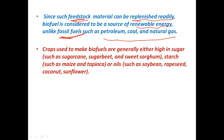The crops used to make biofuels are generally high in sugar — for example sugarcane, sugar beet, and sweet sorghum — or high in starch, such as maize and tapioca, or oils such as soya bean, rapeseed, coconut, and sunflower. All these crops are used to produce biofuels.